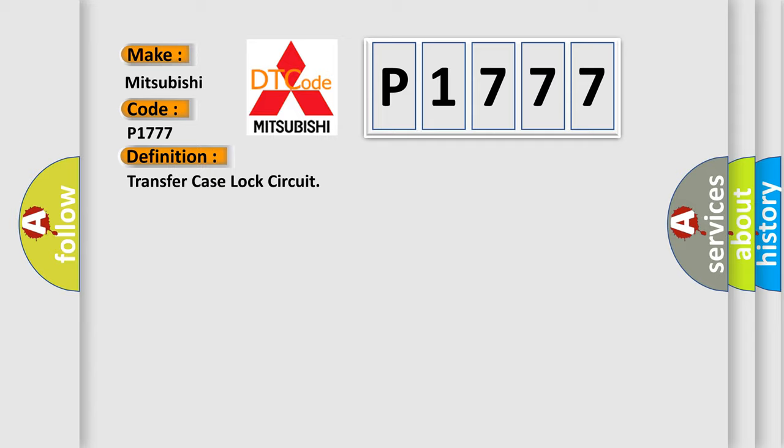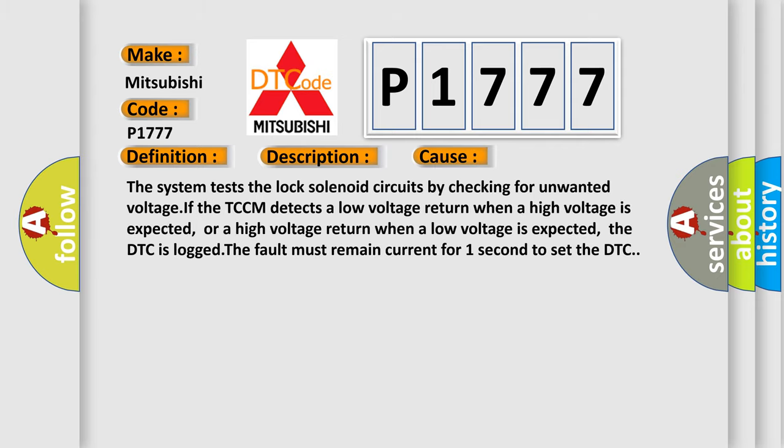Now this is a short description of this DTC code. Ignition on system voltage 9 to 18 volts. This diagnostic error occurs most often in these cases: The system tests the lock solenoid circuits by checking for unwanted voltage. If the TCCM detects a low voltage return when a high voltage is expected, or a high voltage return when a low voltage is expected, the DTC is logged. The fault must remain current for one second to set the DTC.